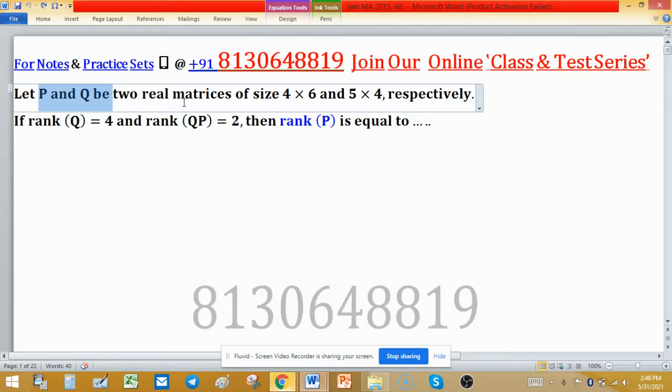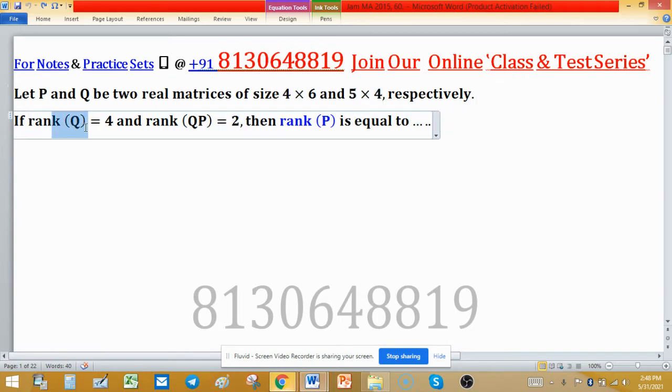Let P and Q be two real matrices of size 4 by 6 and 5 by 4 respectively. If rank of Q is 4 and rank of product QP is 2, then rank of P is equal to what?